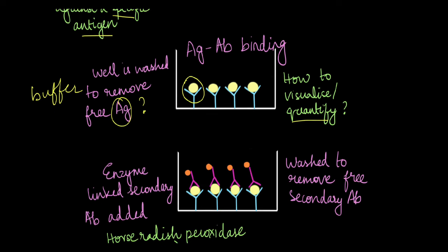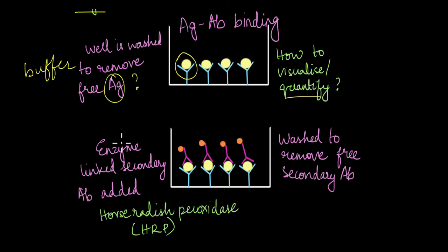This is where the sandwich part and the enzyme-linked part comes into the picture. So once the antigen is added to the well, another antibody called the enzyme-linked secondary antibody is added. This magenta color with the orange blob here, this is the enzyme-linked secondary antibody. This is the antibody and this is the enzyme. What is this enzyme-linked secondary antibody? This is also against this specific type of antigen and it's linked with an enzyme. Usually the enzyme that is commonly used is horse radish peroxidase or HRP.